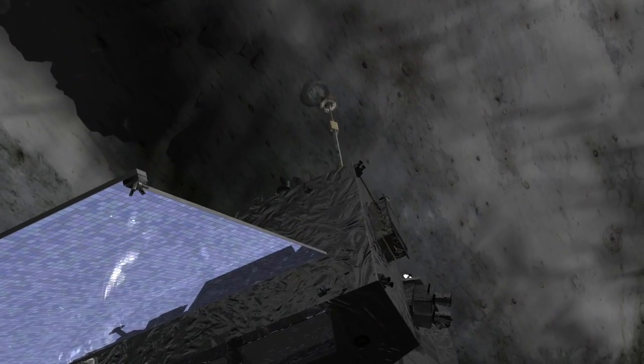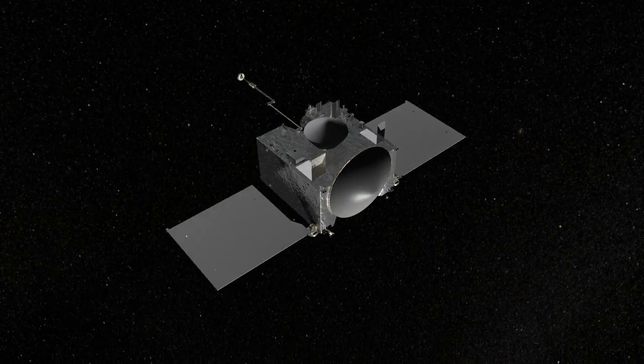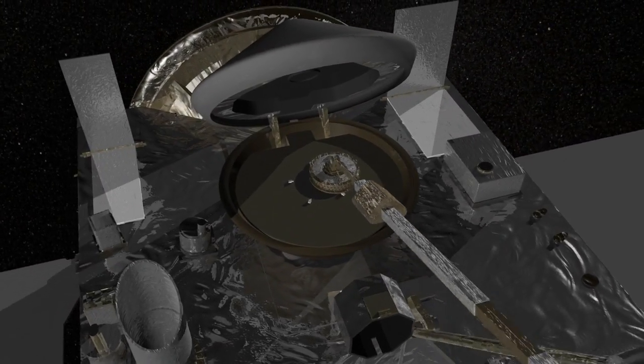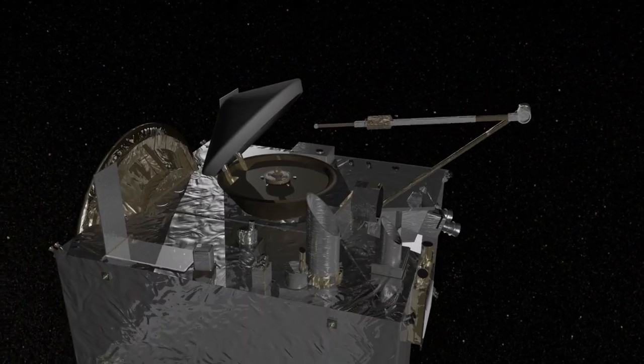After moving away from the surface, OSIRIS-REx will perform a spin maneuver to measure the mass of the sample, then it will carefully stow the TAGSAM head inside the sample return capsule and prepare for the journey back to Earth.